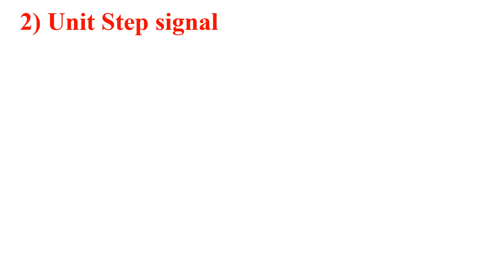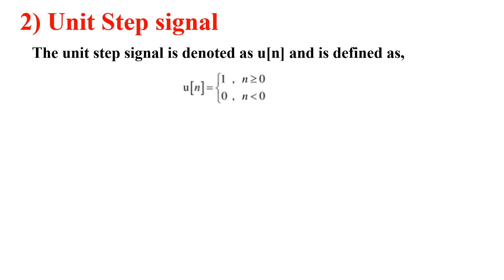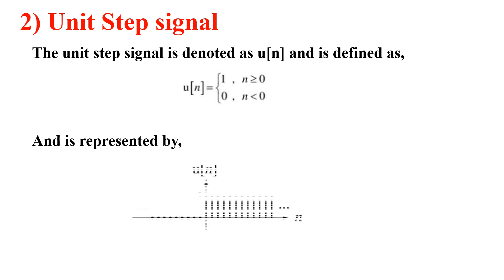The unit step signal is denoted as u(n) and is defined as: u(n) = 1 for n ≥ 0, and u(n) = 0 for n < 0. When plotted, it looks like a step starting at n = 0 — this is known as the unit step signal.